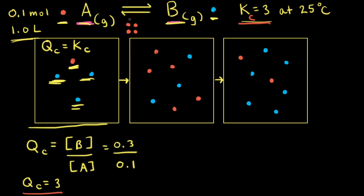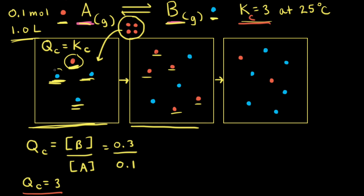Next, we're going to introduce a stress to our reaction at equilibrium by increasing the concentration of A. We're going to add four particles of A to the reaction mixture. The second particulate diagram shows what the reaction looks like right after we add those four red particles. We started with one red particle and added four, so now there's a total of five red particles, and we still have the same three blue particles. QC at this moment is equal to 3 divided by 5, which equals 0.6.